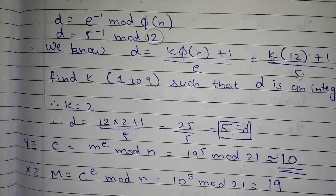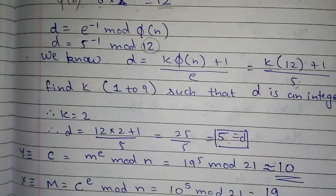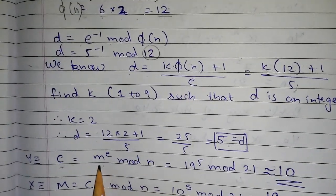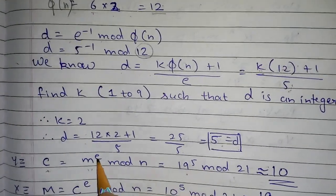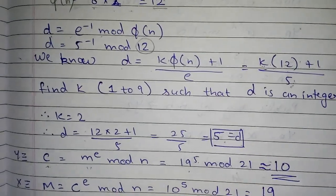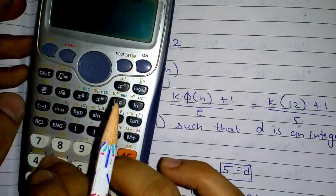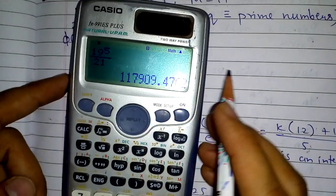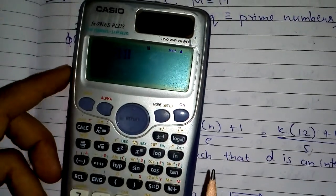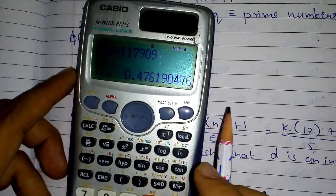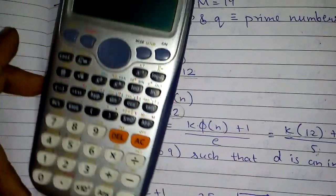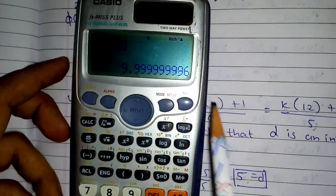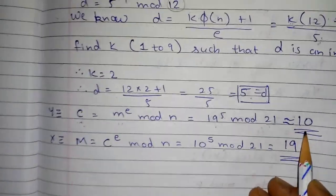Now we have found D. User Y wanted to transmit something to X, so let's find the ciphertext. C = M^E mod N. The message M=19, E=5, so C = 19^5 mod 21. Calculating 19^5 gives 2,476,099. Dividing by 21 and taking the remainder gives approximately 10. So the ciphertext C=10. If user Y wants to send something to X, they will send 10.